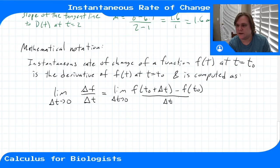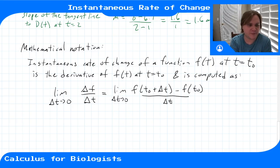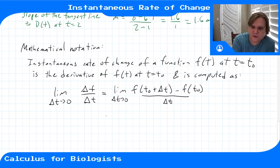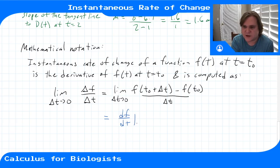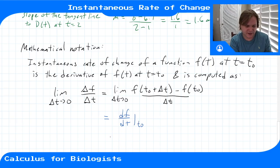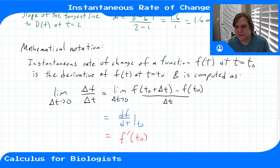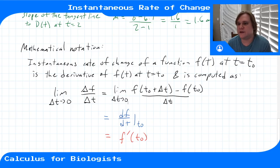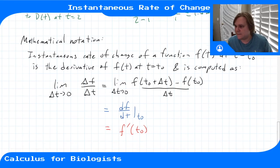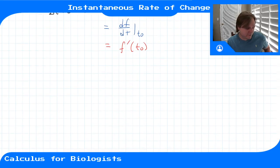Some alternative notation — this is also called the derivative. In differential notation it's df/dt at t₀; it's also written in prime notation as f′(t₀). We'll get into how to think about limits and how to compute them, but this is how we define our derivative and our instantaneous rates of change using this kind of language.